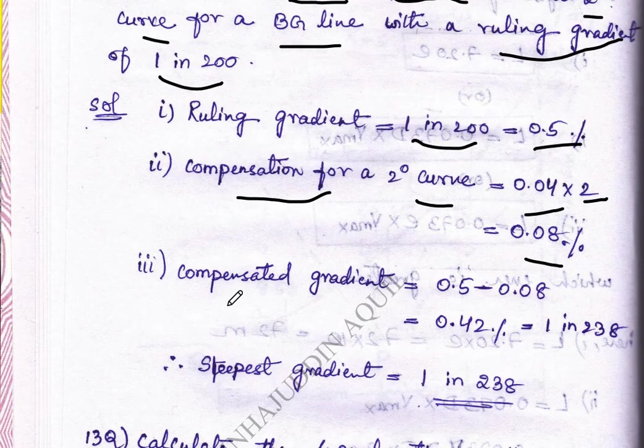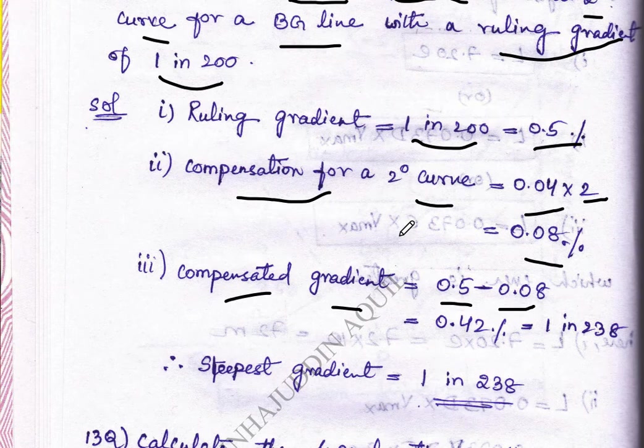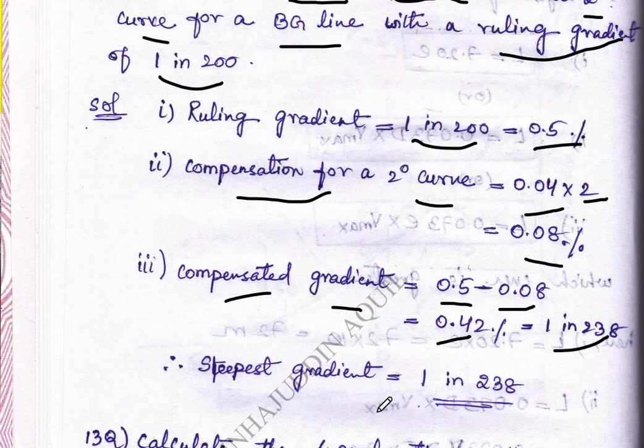Next step is compensated gradient equal to 0.5 minus 0.08, that is rolling gradient minus compensation for a 2 degree curve. So we will get 0.42% which is 1 in 238. Therefore, the value for the steepest gradient is 1 in 238.